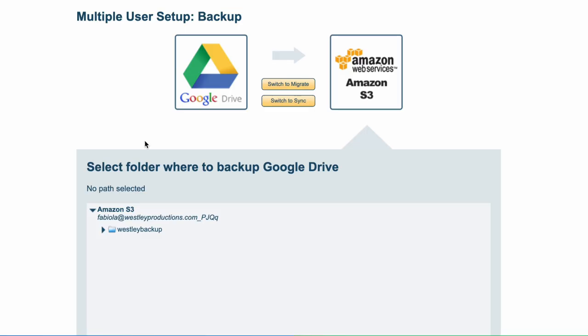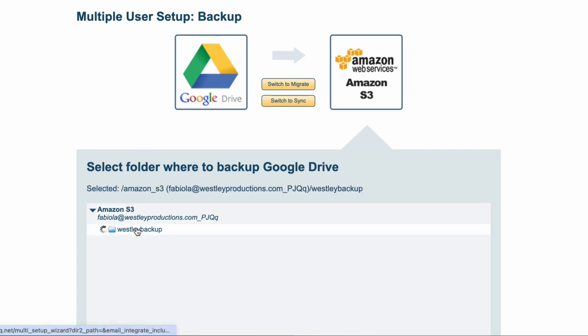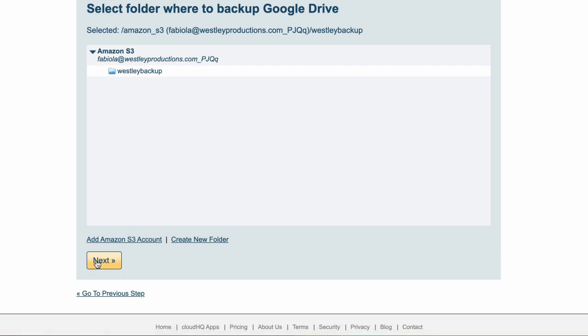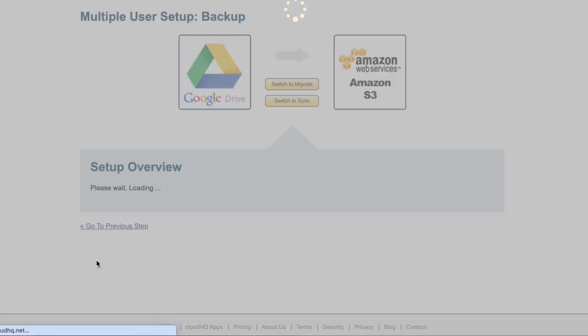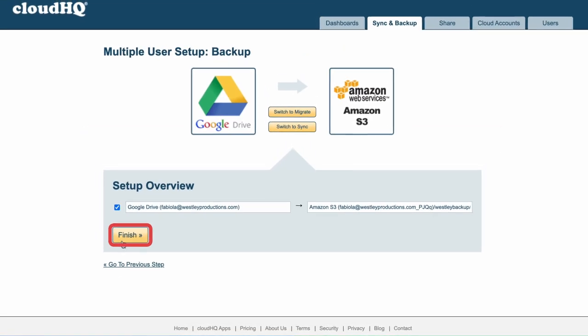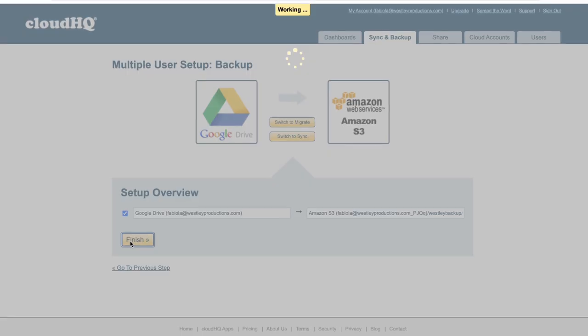Now that your Amazon S3 is connected, you can choose your folder that you want to back up to. Now that you're all set up, you can click the Finish button.